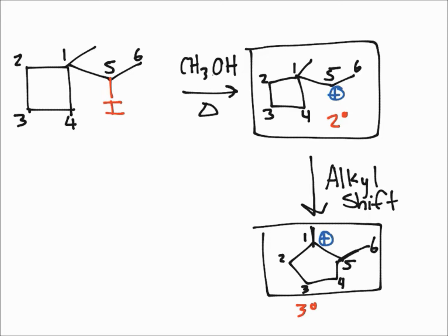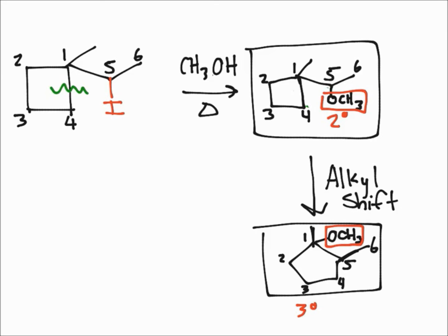What occurs is the bond between carbons breaks, and this carbon becomes bonded to the fifth one. A new bond forms between carbons four and five. Because of that, carbon number one is missing a bond and becomes the carbocation. Then the next step is adding CH3OH onto either carbocation. These two would be your final products with the OCH3 bonding to the carbocation. That one would be the major product because the tertiary carbocation forms more easily and quickly.